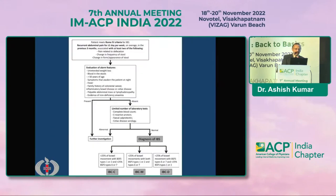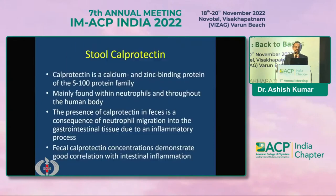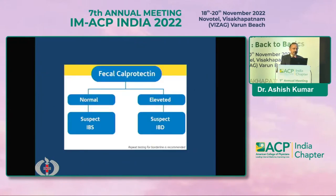Fecal calprotectin is a calcium and zinc binding protein mainly found in neutrophils throughout the body. If calprotectin is excreted in feces, it indicates increased neutrophil migration into the GI tract, which means there is inflammation. When stool calprotectin is high, it indicates inflammatory bowel disease and is not IBS. If fecal calprotectin is normal, it is probably IBS, but if elevated, we must suspect inflammatory bowel disease — IBD.